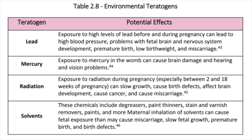Environmental teratogens. Lead: exposure to high levels of lead before and during pregnancy can lead to high blood pressure, problems with fetal brain and nervous system development, premature birth, low birth weight, and miscarriage. Mercury: exposure to mercury can cause brain damage and hearing and vision problems. Radiation: exposure to radiation during pregnancy, especially between 2 and 18 weeks of pregnancy, can slow growth, cause birth defects, affect brain development, cause cancer, and cause miscarriage. Solvents — including degreasers, paint thinners, stain and varnish removers, and paints — maternal inhalation of solvents can cause fetal exposure that may cause miscarriage, slow fetal growth, premature birth, and birth defects.